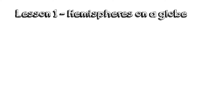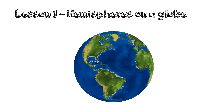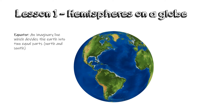Let's jump in and take a look at lesson 1, which is Hemispheres on a Globe. The Earth can be described as a sphere — this is why we talk about the globe. The equator is an imaginary line which divides the Earth into two equal parts. We call this the Northern Hemisphere and the Southern Hemisphere.